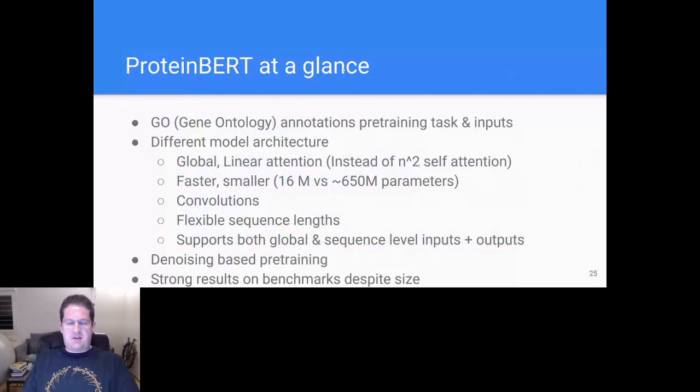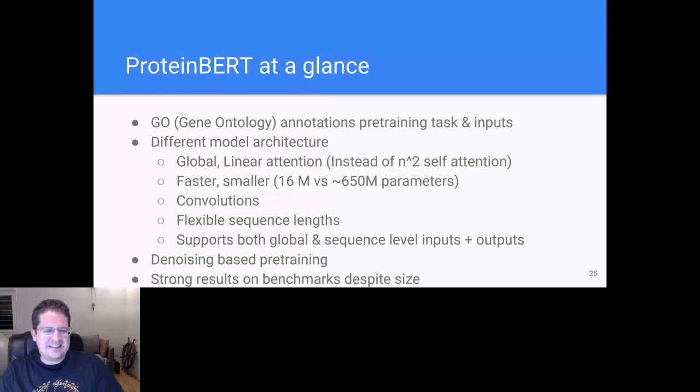So what do we do differently? Well, the big thing is that we have a very novel pre-training task, which is specific to proteins. We predict the gene ontology annotations for the different proteins that we have. Our architecture is also extremely different from classical BERT attention transformers. We have a novel form of attention, a type of global attention, which has linear complexity instead of quadratic N squared complexity, which is a major bottleneck in these architectures. It's also highly interpretable.